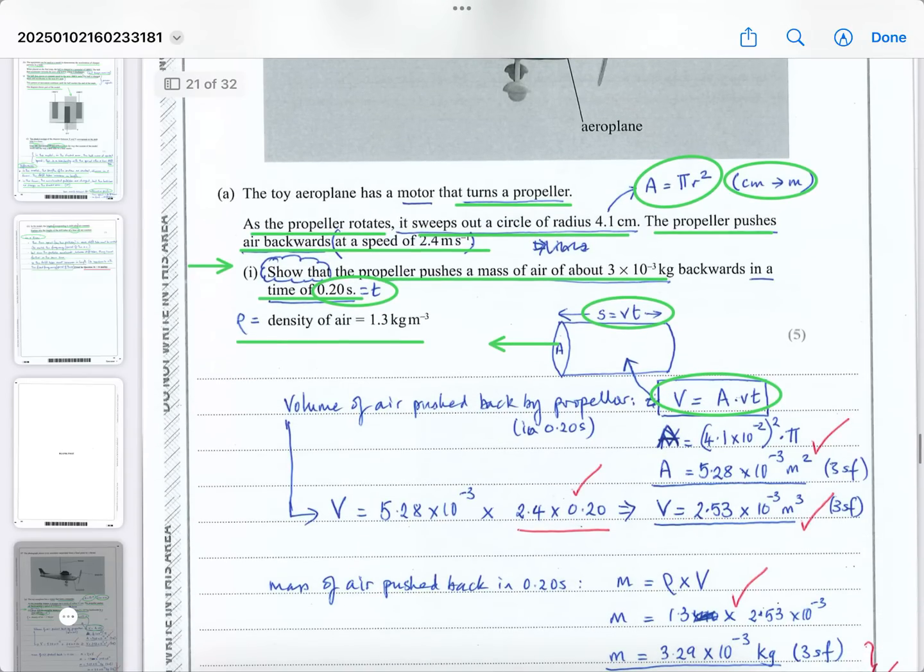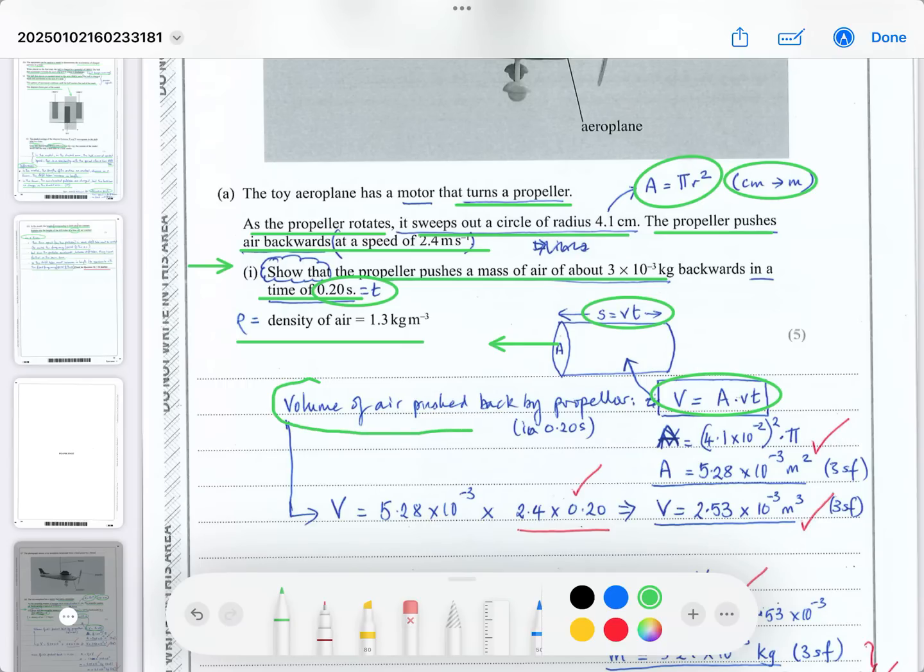The volume of air pushed backwards enables us to work out the mass using mass = density × volume. First, calculate the area. Converting centimeters, r = 4.1×10⁻² m, and πr² gives an area of 5.28×10⁻³ m² to three significant figures. Once you have the area that the propellers sweep out,